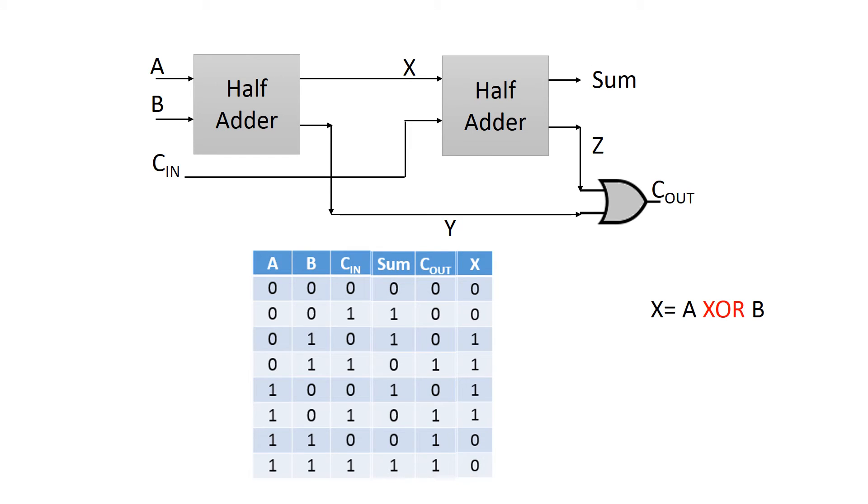The value of X is given as A XOR B. The value of Y is given as A and B. And the value of Z is given as X and C in.